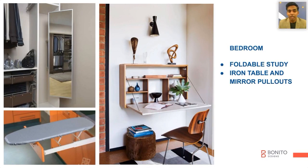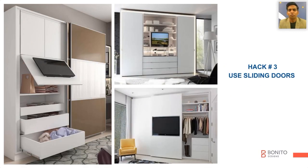Instead of a large study table, you can use a foldable study. In the wardrobe areas or for the drawer areas, you can have iron pullouts. You can use them for two different types of functions — you can have a sliding door with wardrobe or storage items, a TV unit with storage items, or a study-cum-wardrobe combination.